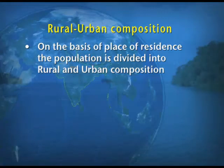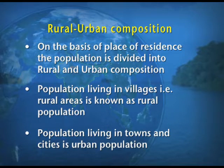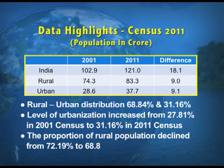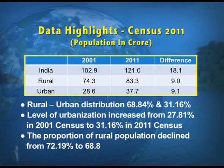First we take up the rural-urban composition. On the basis of the place of residence, the population is divided into two parts: rural and urban. Look at the table on screen showing the population of India under two subheads, rural and urban population, for two different censuses, 2001 and 2011, with a column indicating the difference in population in these years.